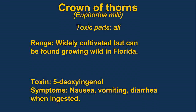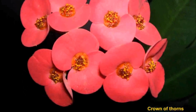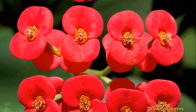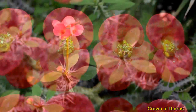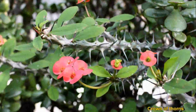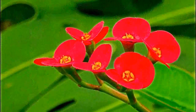Crown of Thorns, otherwise known as Jesus Christ plant, contains a caustic and irritant chemical in its latex. General symptoms of ingestion would be abdominal pains, blistering and irritation of the mouth and throat. The plant is native to Madagascar.